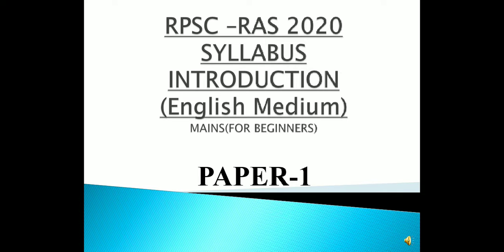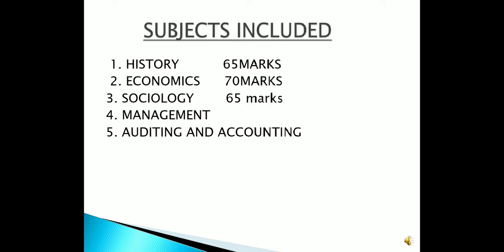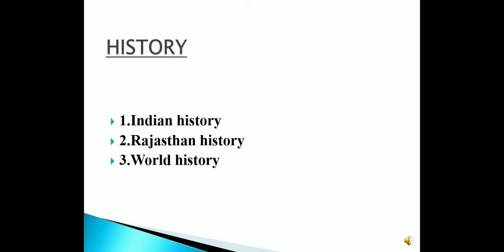Hello everyone. Today we are starting a series in which I will explain the syllabus of Paper 1 for beginners. The subjects included in Paper 1 are History, Economics, Sociology, Management, Auditing, and Accounting. History is 65 marks, Economics is 70 marks, and Sociology, Management, and Auditing is 65 marks.